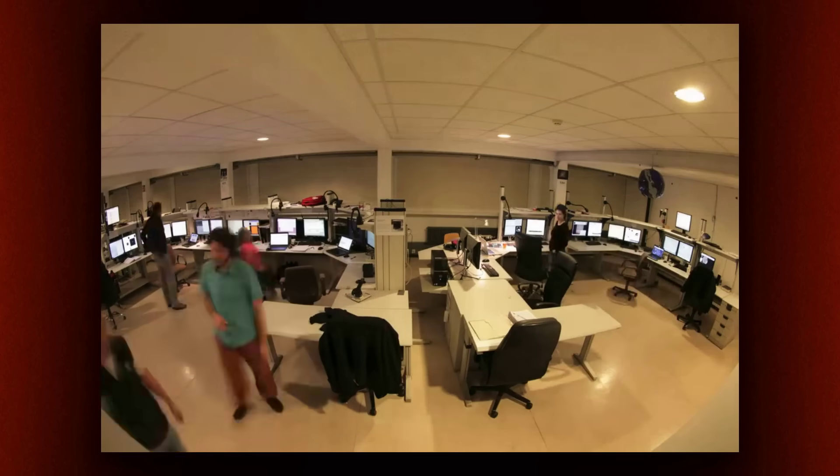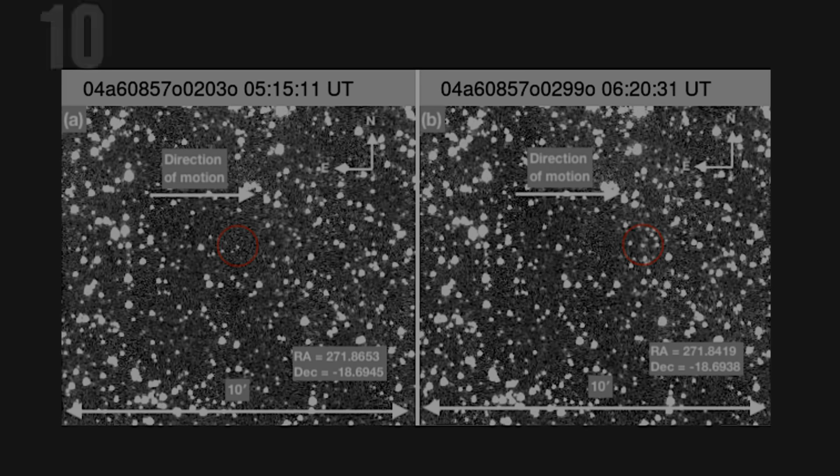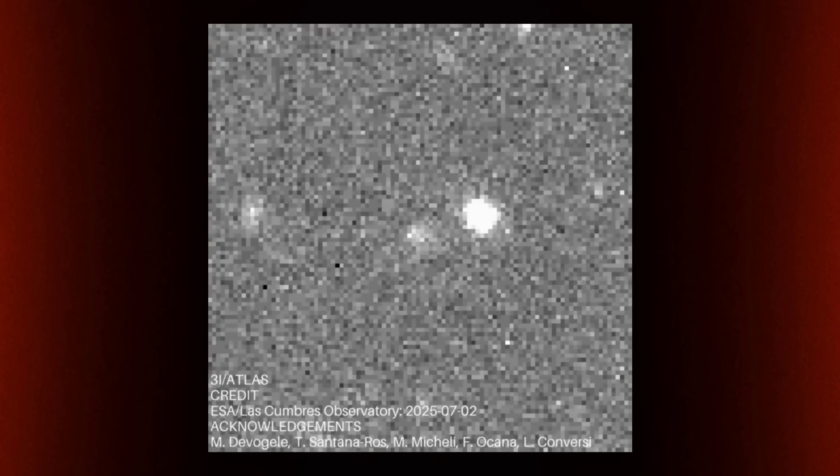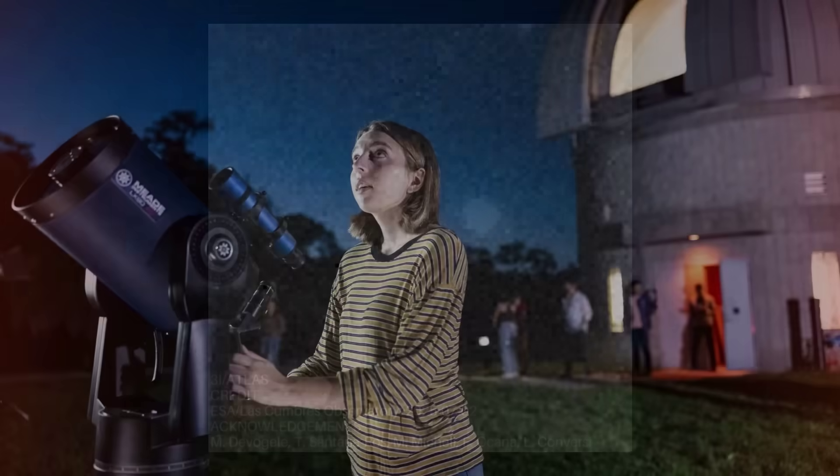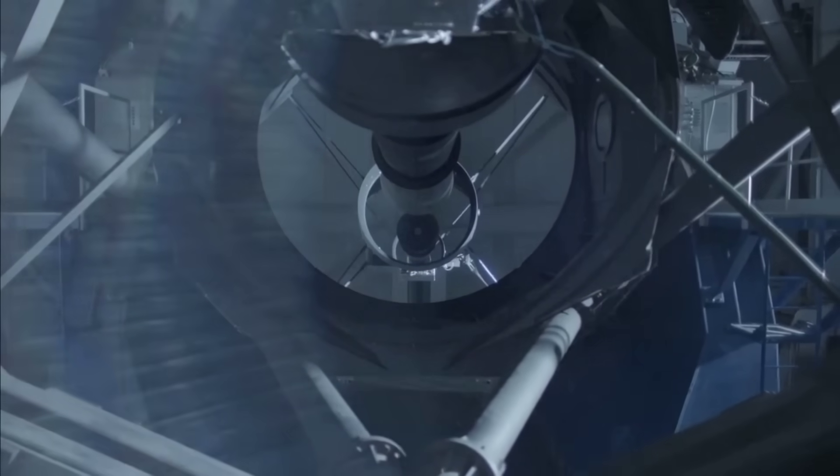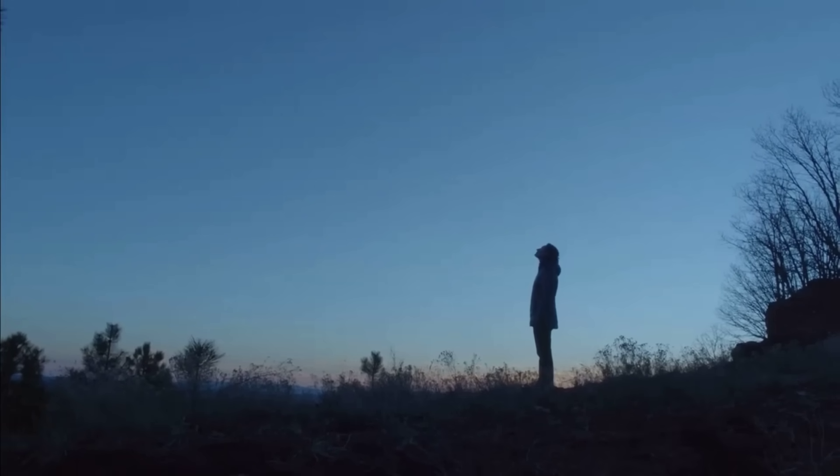The excitement in the Atlas control room that night was real. Slack messages and emails flew as the team realized the object's inbound speed was around 60 kilometers per second, far too high for anything bound to our Sun. In just 48 hours, the world's astronomers pivoted from routine survey work to tracking an interstellar visitor, knowing that every hour of data would matter. This is the kind of moment that turns a telescope operator into a discoverer of the unknown.